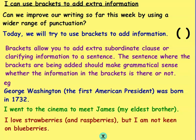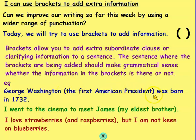Just one important thing: before you use brackets, you need to make sure the sentence makes sense without the bracketed information. For example, 'George Washington was born in 1732' makes sense by itself. We're adding extra information to a sentence that already makes sense. So: 'George Washington, open brackets, the first American president, close brackets, was born in 1732.' That's how it works.